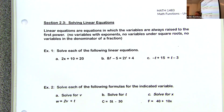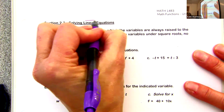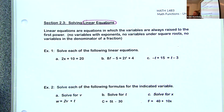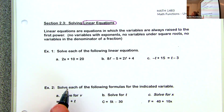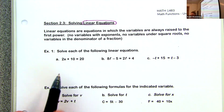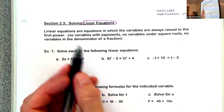We're going to get into something a little different: linear equations. Can anybody tell me what it means when it says linear equations — what does it create if we graph it? A straight line. The root word of linear is line.